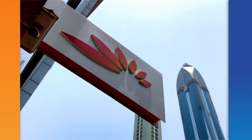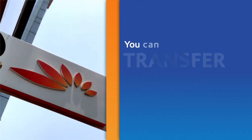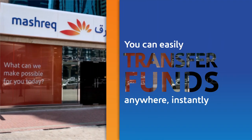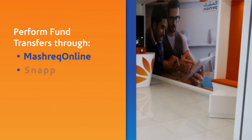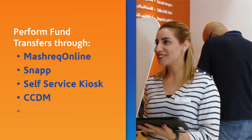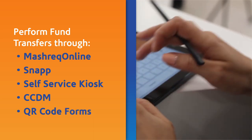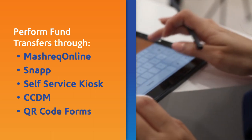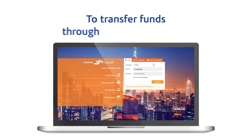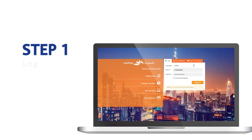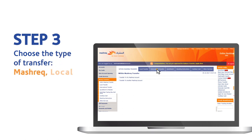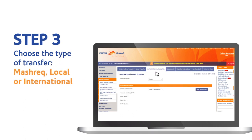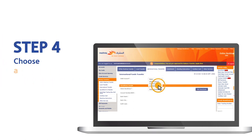What if we told you that you can easily transfer funds anywhere instantly? You can transfer funds to anyone using Mashreq Online, Snap, self-service kiosk, CCDM, or through QR code forms. To transfer funds through Mashreq Online, login to Mashreq Online, click on money transfers, and choose the type of transfer — Mashreq local or international — then choose a beneficiary.